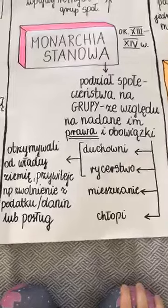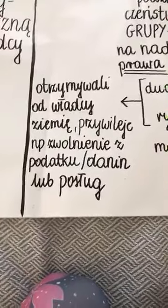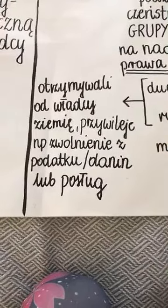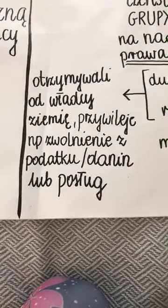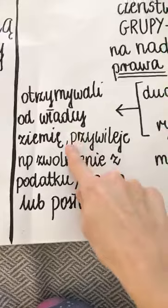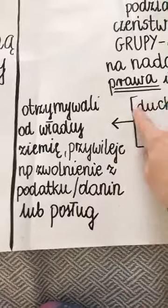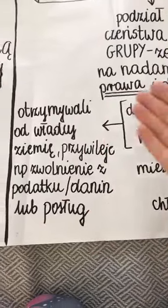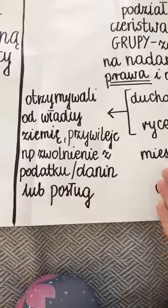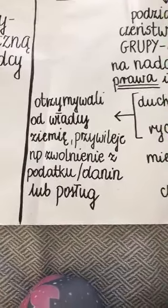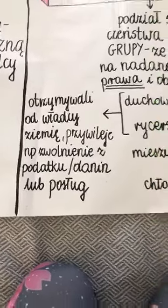Duchowni i rycerstwo w zamian za prawa, które otrzymali, dostają od władcy ziemię, na której gospodarują, i różne przywileje. Przywilej to bardzo ważne słowo – to jest po prostu prawo. Na przykład rycerz ma przywilej, że nie musi płacić podatku przez jakiś czas, jest z niego zwolniony. Mieszczanie niekoniecznie muszą być z takiego podatku zwolnieni. O to w tym zasadzie chodzi.